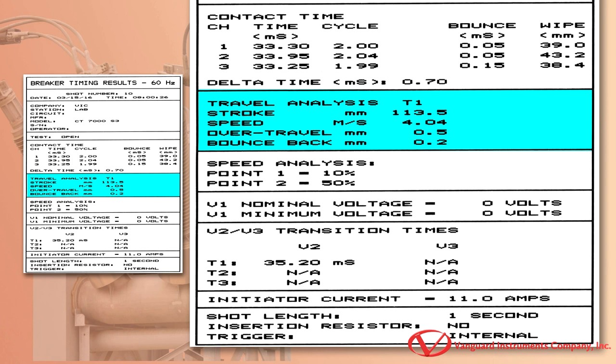The travel analysis for transducer one is shown here. The analysis comprises the breaker stroke, contact velocity, contact over travel, and contact bounce back. They can be displayed in either English or metric units.